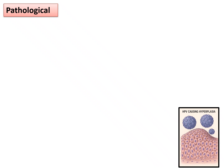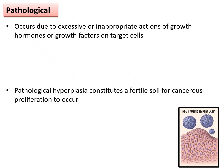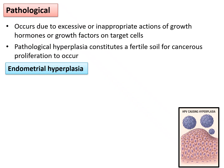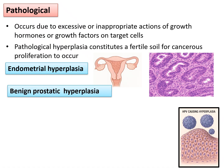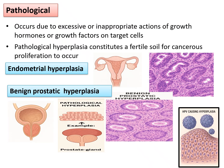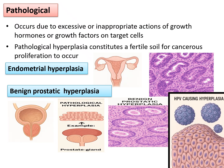Pathological hyperplasia occurs due to excessive or inappropriate actions of growth hormones or growth factors on target cells and constitutes a fertile soil for cancerous proliferation. The best example is endometrial hyperplasia — the inner lining of the endometrium undergoes hyperplasia under the influence of estrogen; more estrogen leads to more endometrial hyperplasia. Another example is benign prostatic hyperplasia in elderly men, causing urethric obstruction. HPV causing wart formation is also an example of pathological hyperplasia.